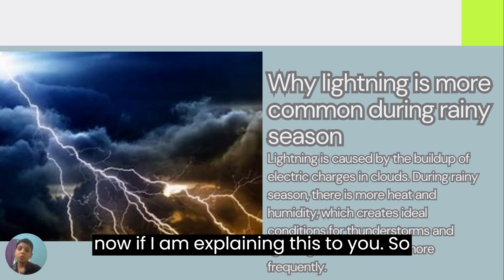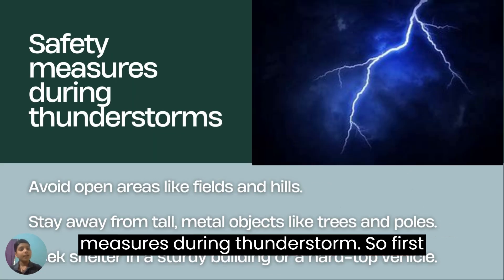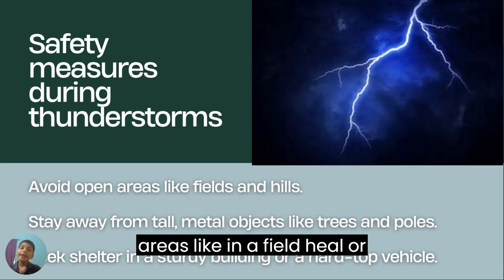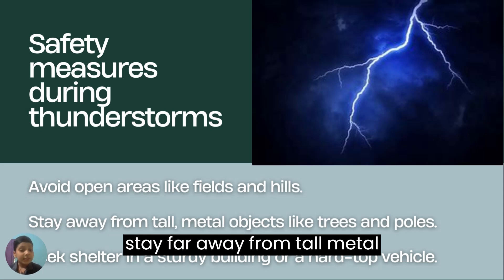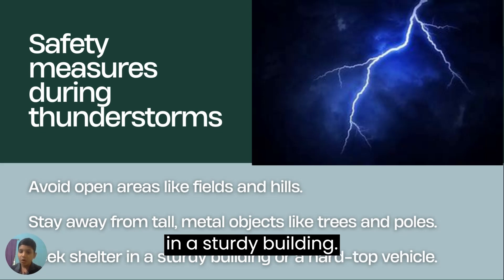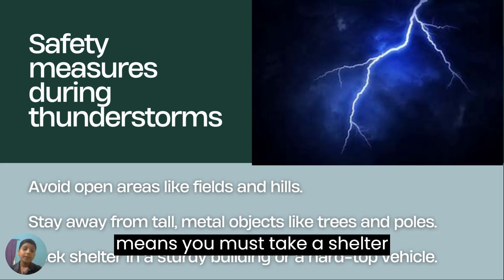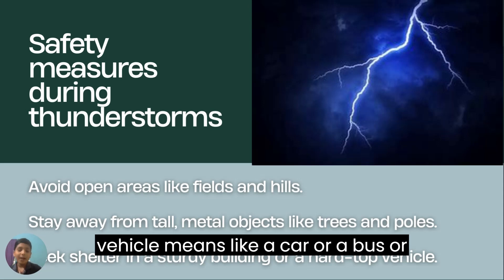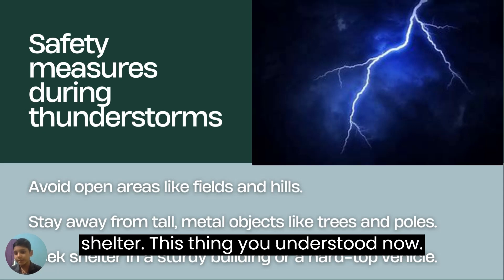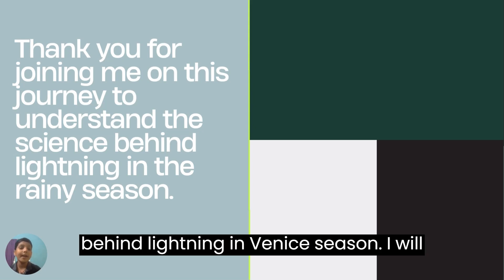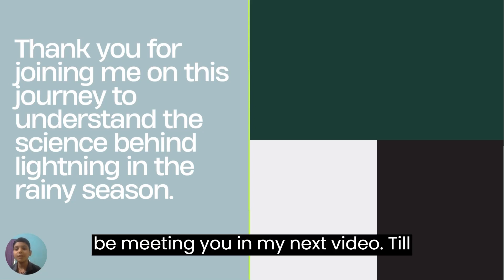Now let me explain safety measures during a thunderstorm. First, avoid going to open areas like any field or outside areas. Second, stay far away from tall metal objects like trees and electric poles. Third, seek shelter in a sturdy building or a hard-top vehicle like a car or a bus. Thank you so much for joining me on this journey and understanding the science behind lightning in the rainy season. I will see you in my next video — bye bye everyone!